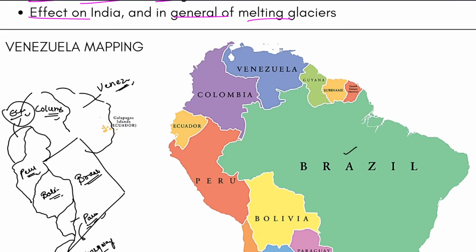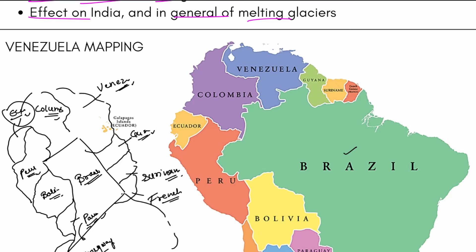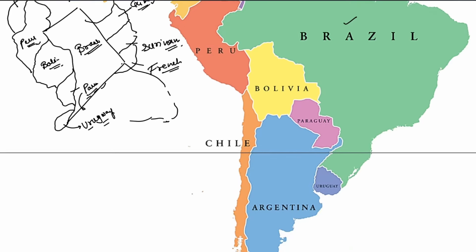There are a few smaller countries such as Guyana. There was a news between Guyana and Venezuela very recently — a land dispute of sorts. Then there is a small country known as Suriname, and finally one small country at the last known as French Guyana.